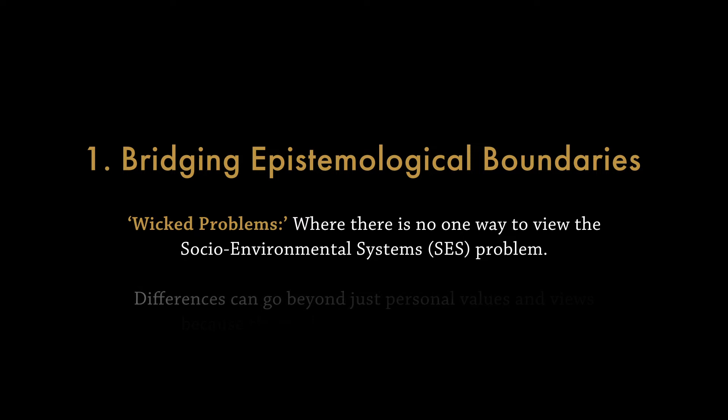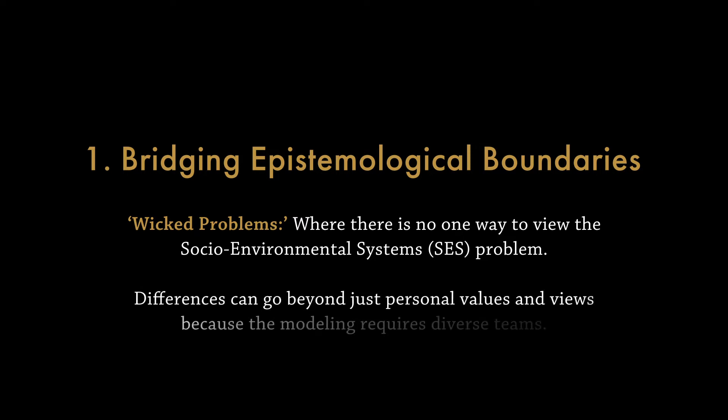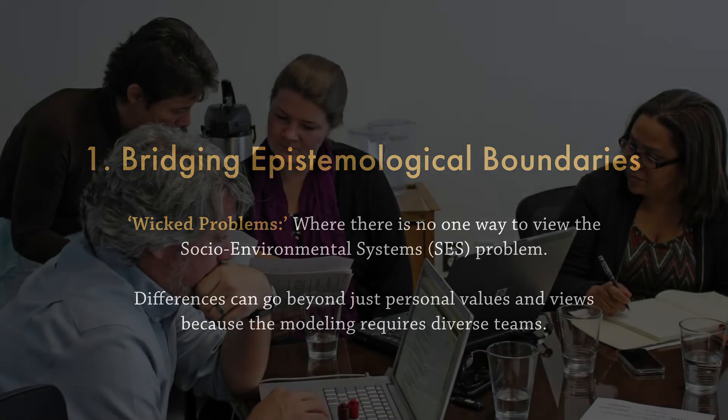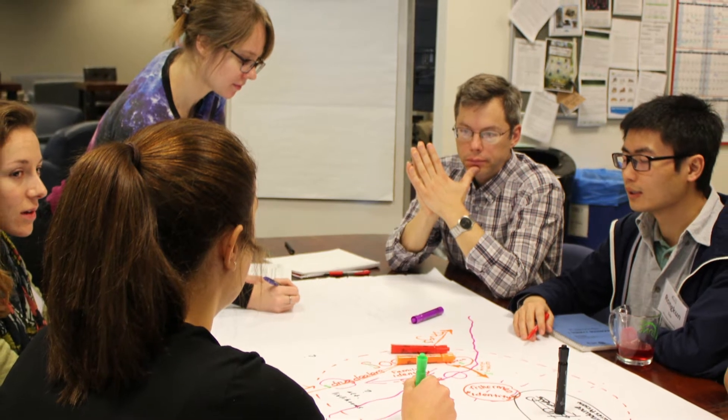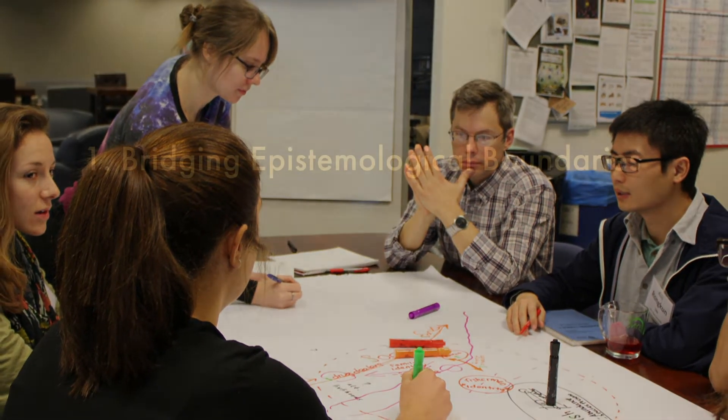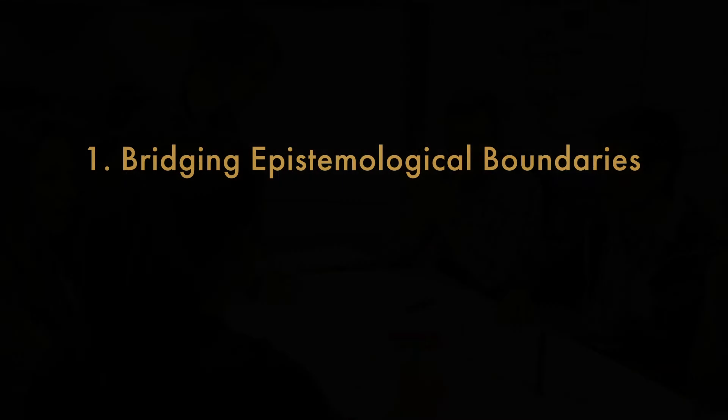For SAS problems, differences can go beyond personal values and views, because modeling requires diverse teams. Scholars from different disciplinary fields, and often even stakeholders, are part of the modeling team. They typically differ in their own disciplinary language, where a word used in one discipline can mean something entirely different to another disciplinary scholar. And perhaps even more daunting is that scholars often come with divergent theoretical and methodological lenses that may be hard for people outside their field to grasp or even to accept.